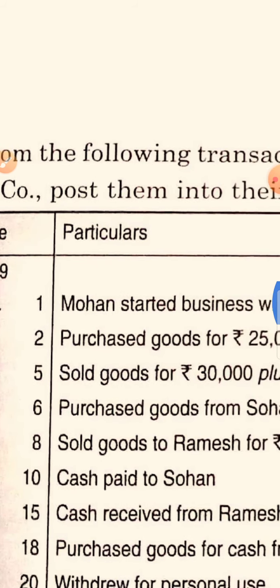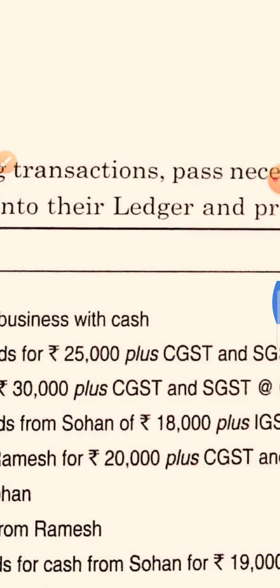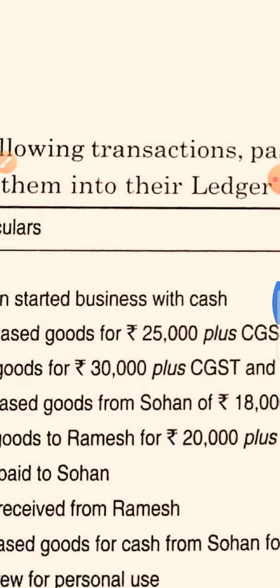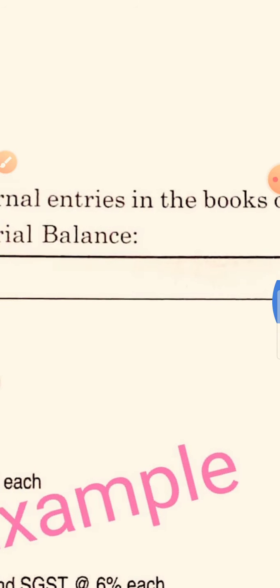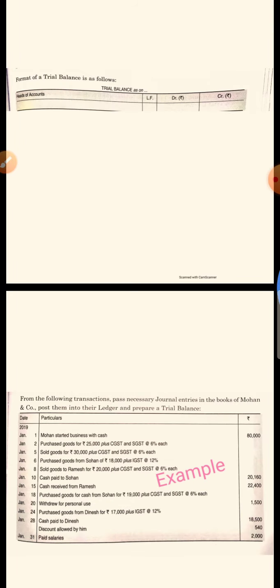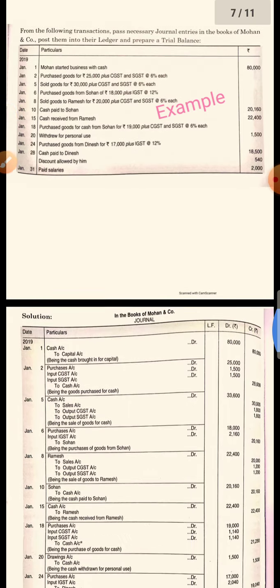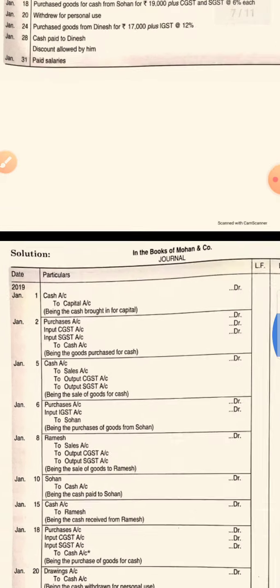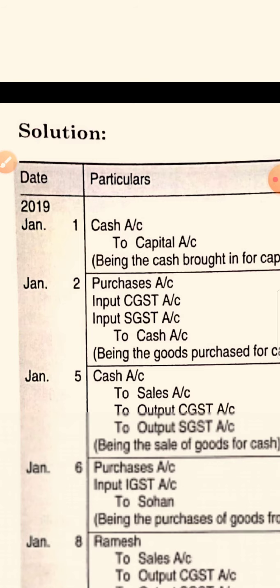January 1st 2019: Mohan started business with cash of 80,000. This is a simple general entry — business started, cash comes into the business, so cash account debit to capital account. Capital is a liability so it should be credited. So the entry is: cash account debit to capital account.